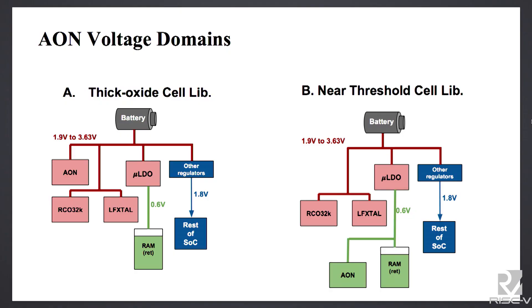In the always-on domain, we have two kinds of different implementations. One is using the always-on logic for the voltage domain of the battery. In order to do that, you need to implement that logic in a SiFive standard cell library. The problem with that is that then you are consuming power because you are in the large voltage domain.